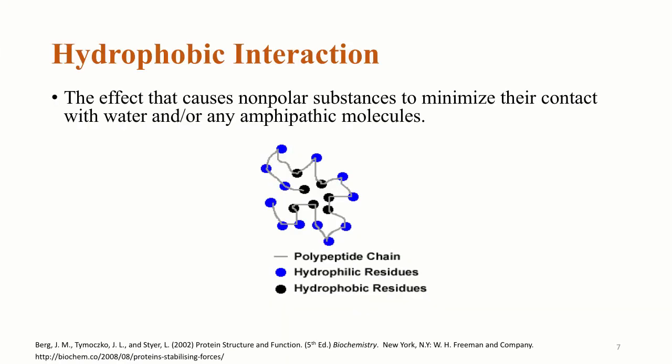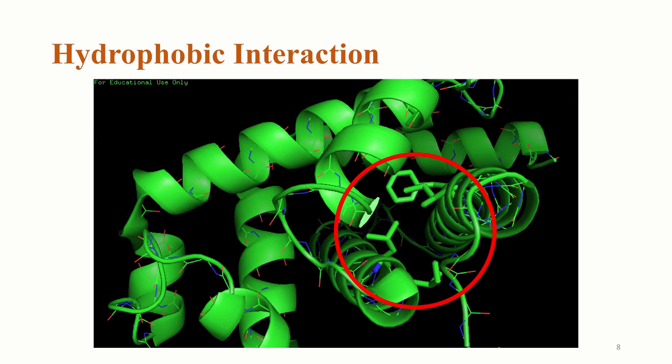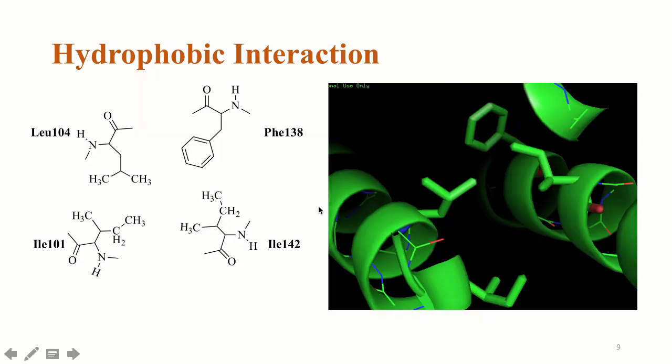First, let's talk about hydrophobic interactions. As mentioned, hydrophobic interactions are known to be the major driving force in protein folding. These interactions occur among non-polar substances to minimize their contact with water and any amphipathic molecule. This image depicts how hydrophilic polar residues are on the surface of the protein, while the hydrophobic, non-polar residues are buried inside. In the example within myoglobin, we can see four non-polar amino acid residues buried inside the protein, surrounded by alpha helices — specifically, the side chains of leucine-104, two side chains of isoleucine, and one side chain of phenylalanine interacting with each other, avoiding contact with water molecules.